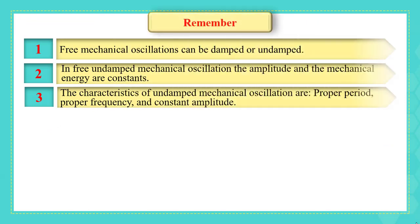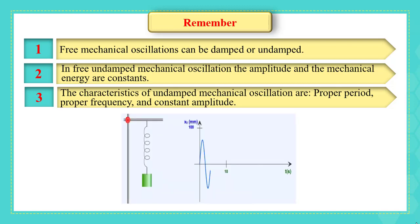Remember first that we have mentioned that free mechanical oscillations can be damped or undamped. In free undamped mechanical oscillations, the amplitude and mechanical energy are constants. The characteristics of the undamped mechanical oscillation are proper period, proper frequency, and constant amplitude.